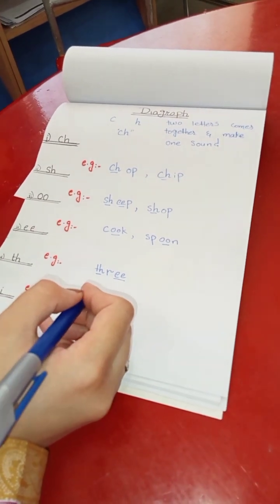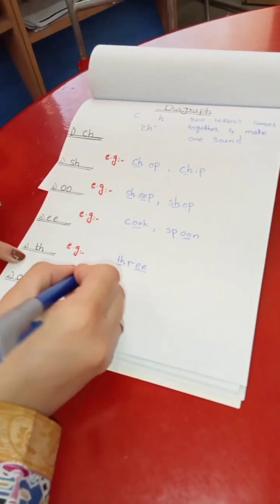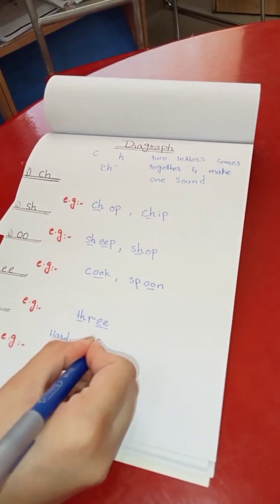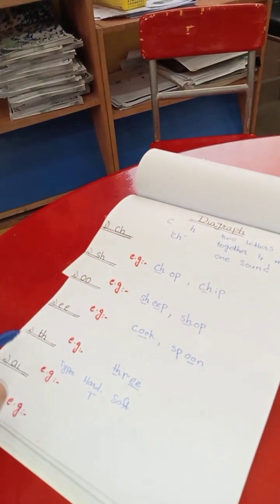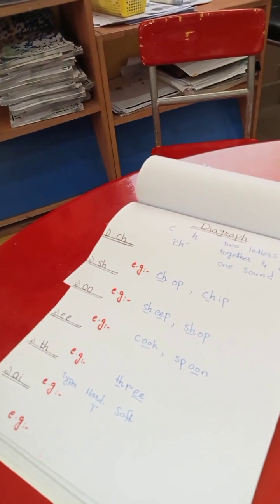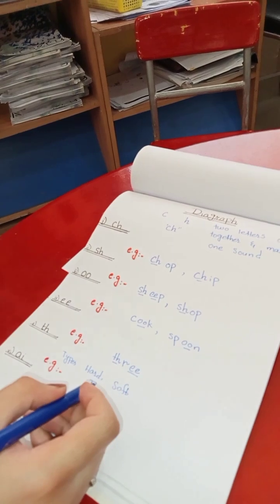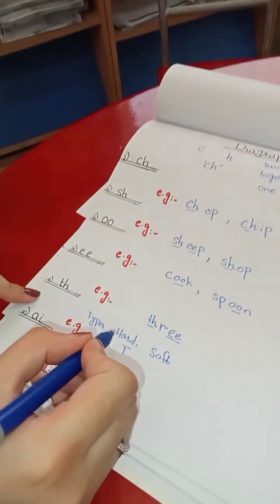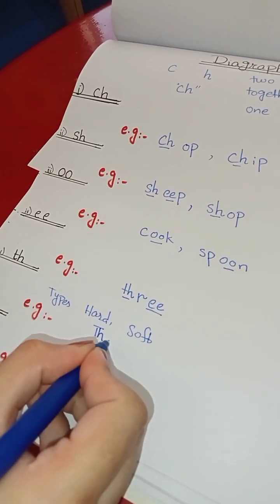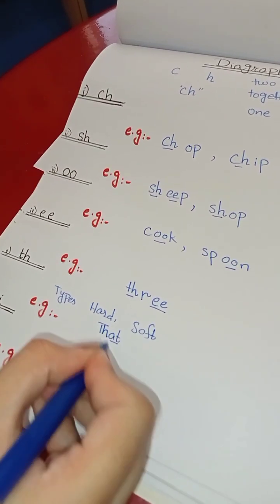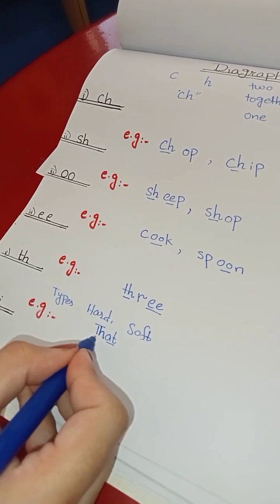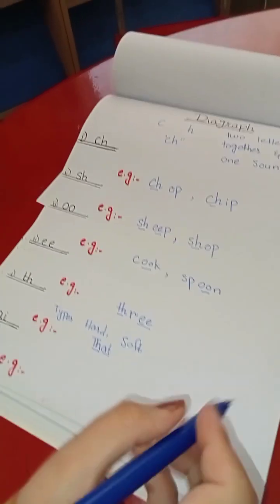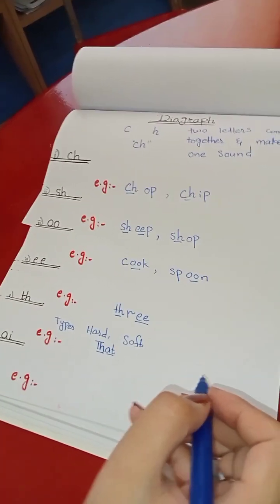And now we will learn about digraph TH. There are two types of TH: hard and soft. The fifth digraph is TH. Let's learn about the hard sound. The hard sound is 'th'. Like 'th-a-t' — 'at' is a two-letter word and TH is a digraph. It will become 'that'.